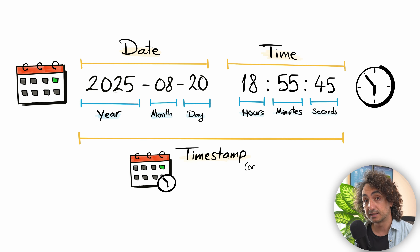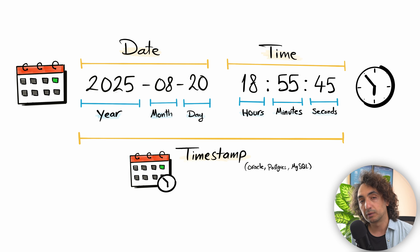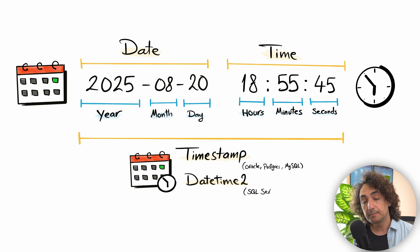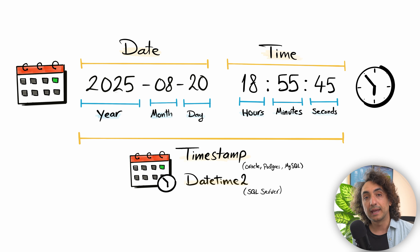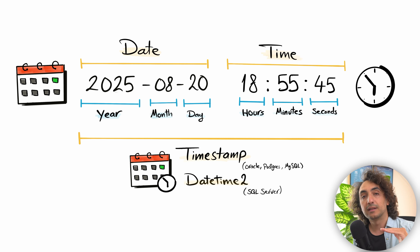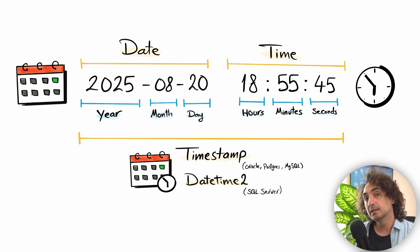That combined structure is called a timestamp — used in databases like Oracle, Postgres, and MySQL — but in SQL Server we call it datetime. The datetime or timestamp has the date information together with the time information. It has six components from left to right following a hierarchy: year, month, day, then hour, minutes, and seconds. Those are the three different types of date and time information in SQL: date alone, time alone, or combined in datetime.